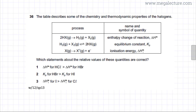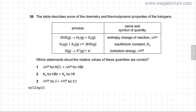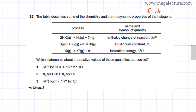The question describes a table covering the chemistry and thermodynamic properties of the halogens, which is group 7 or group 17. So we're talking about fluorine, chlorine, bromine, iodine, etc.